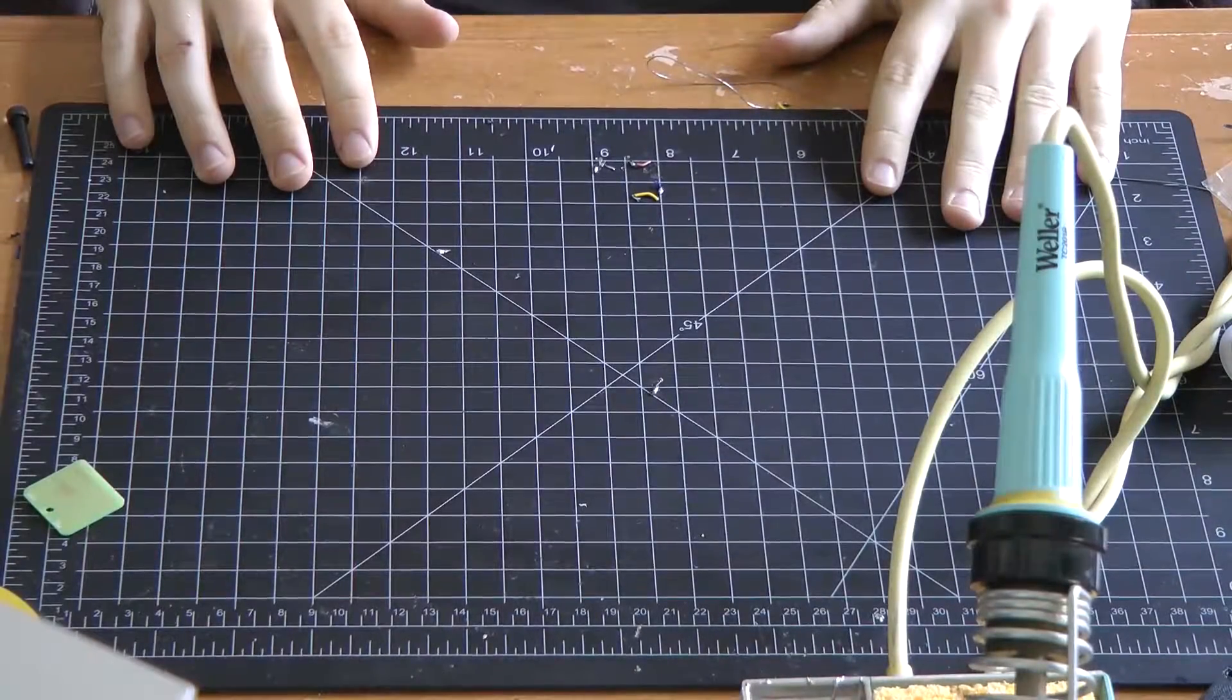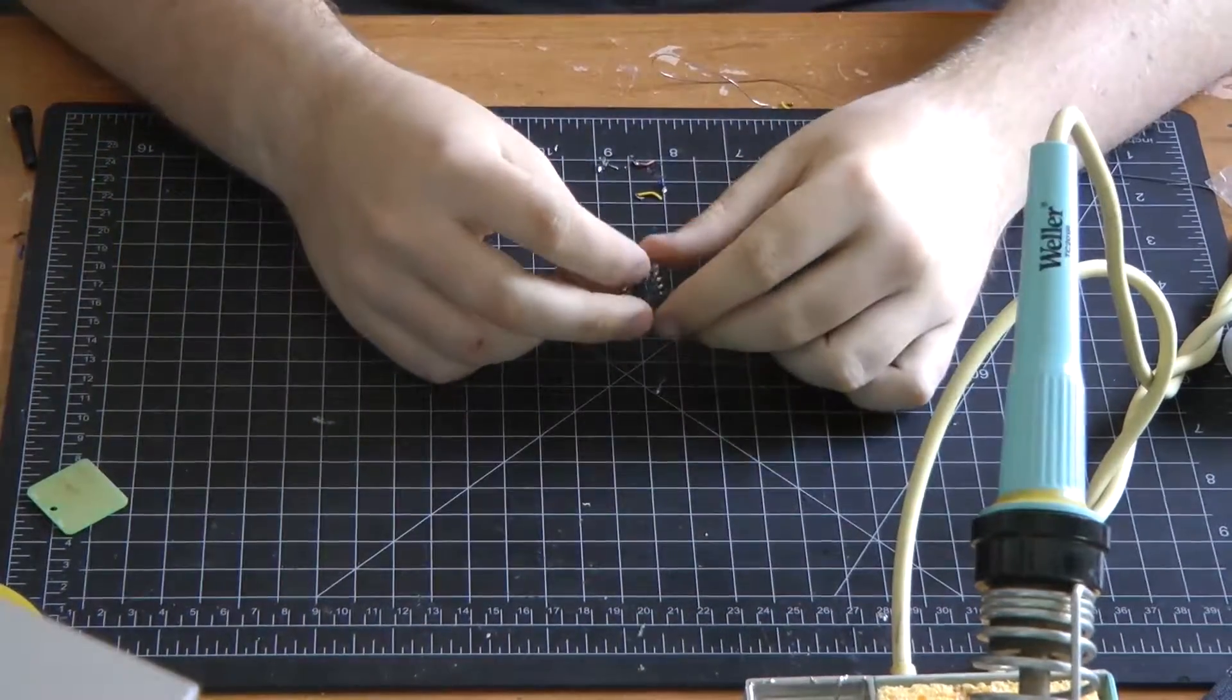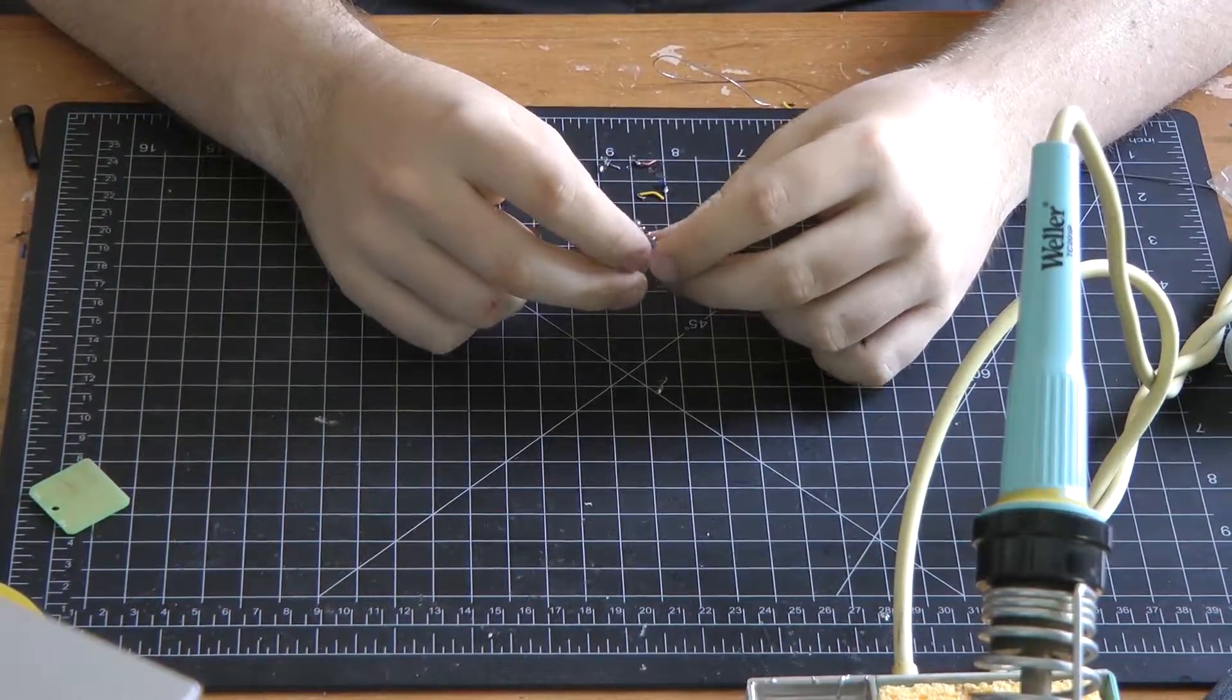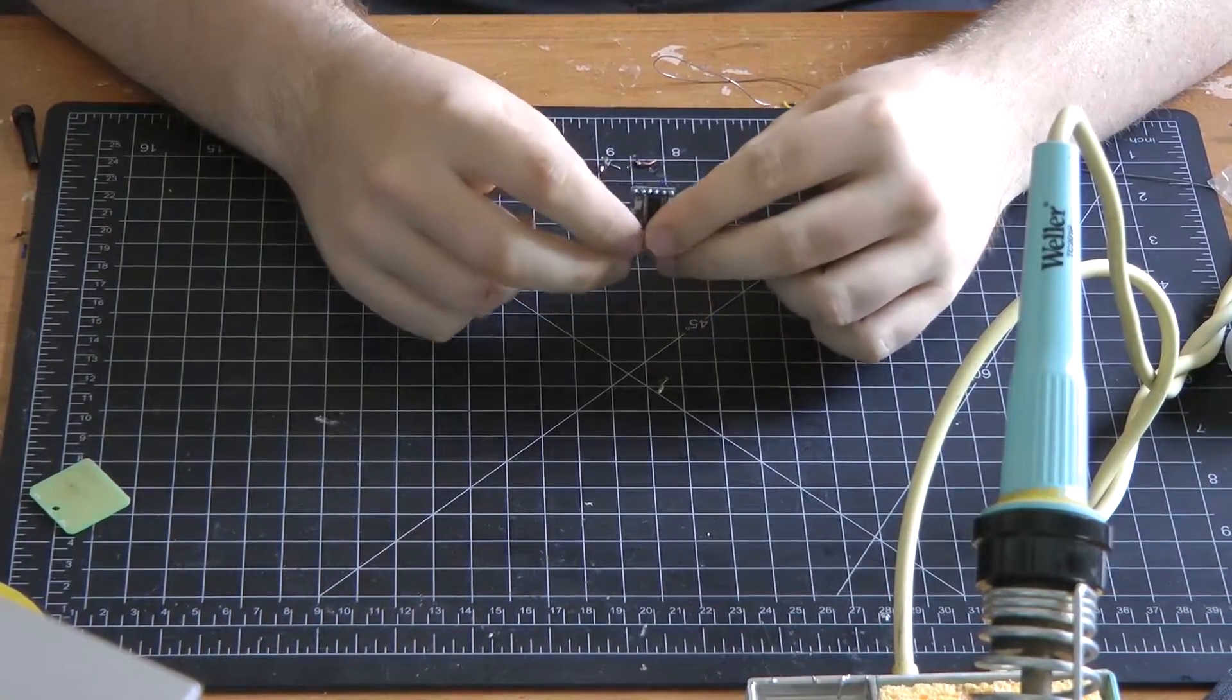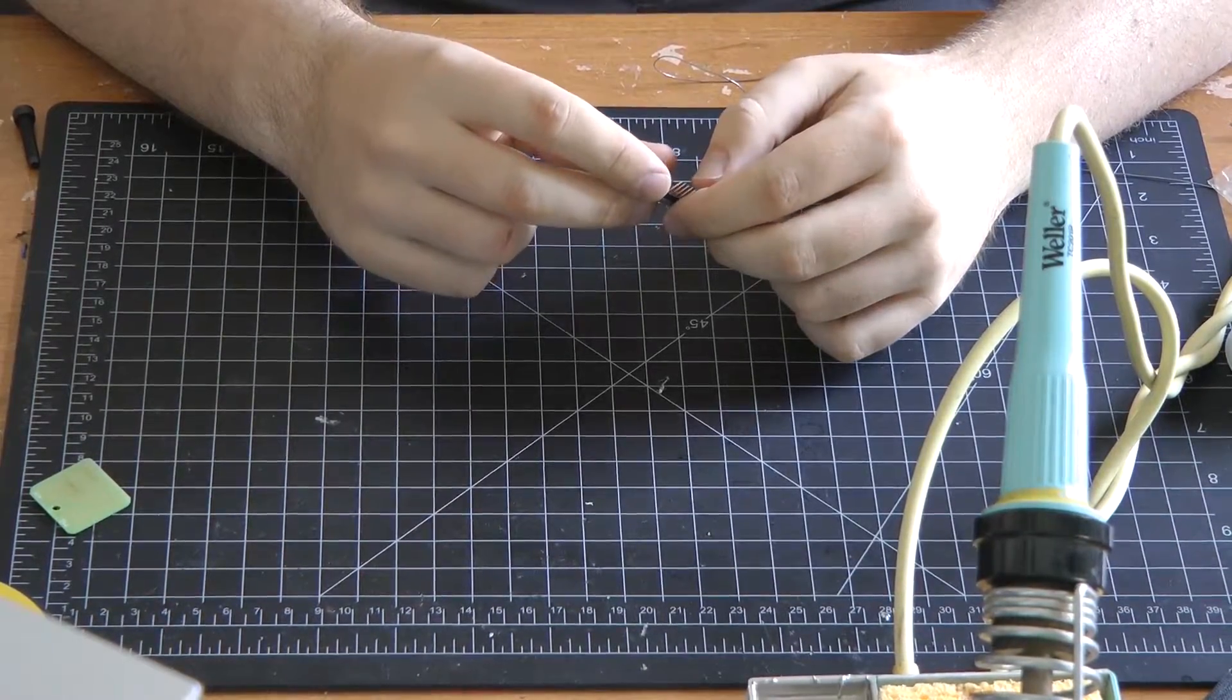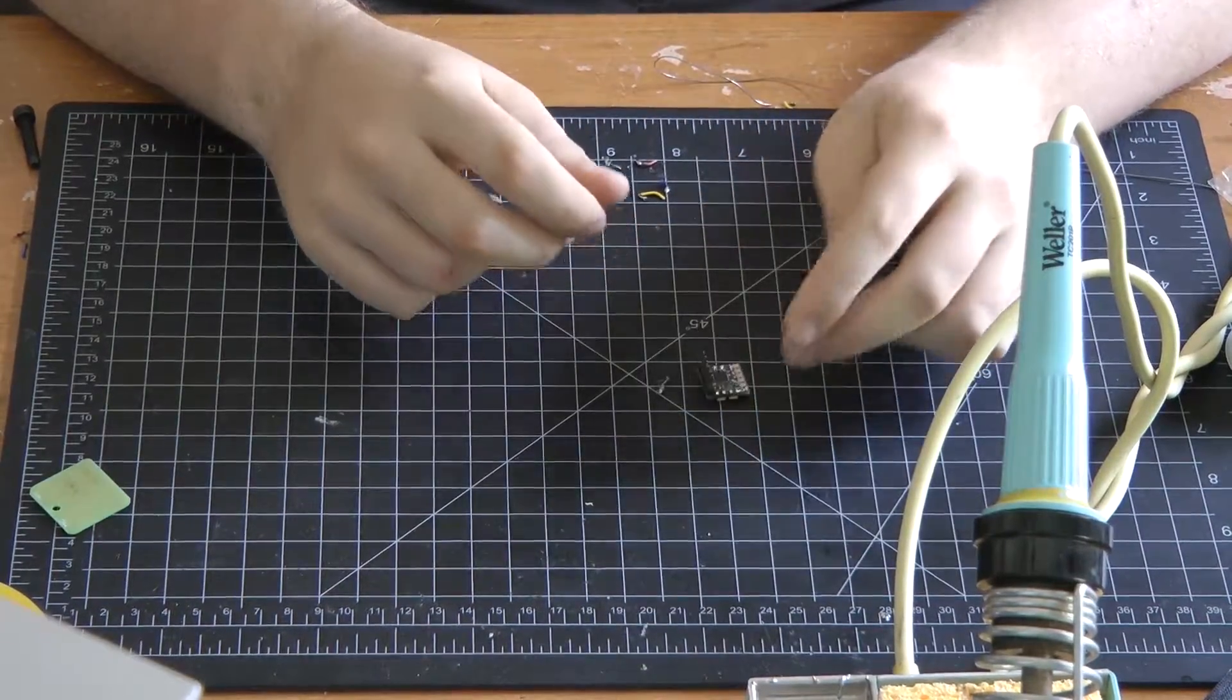To start off, we're just going to go over some of the components that we need. The first thing we're going to need is this little micro minimum OSD. This is pretty basic, you can find it for about eight dollars online. What you're going to want to do is solder this header pin on here - just a little six pin header that we're going to use. You just want to solder that right on there.